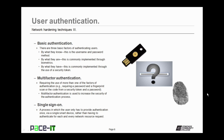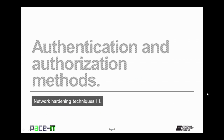You can combine these in a process called multi-factor authentication — requiring the use of more than one of the factors of authentication, such as requiring a password and a fingerprint scan, or the code from a security token and a password. Multi-factor authentication is used to increase the security of the authentication process. You might also implement a single sign-on process, in which the user only has to provide authentication once via a single smart device, rather than having to authenticate for each and every network resource that they request.